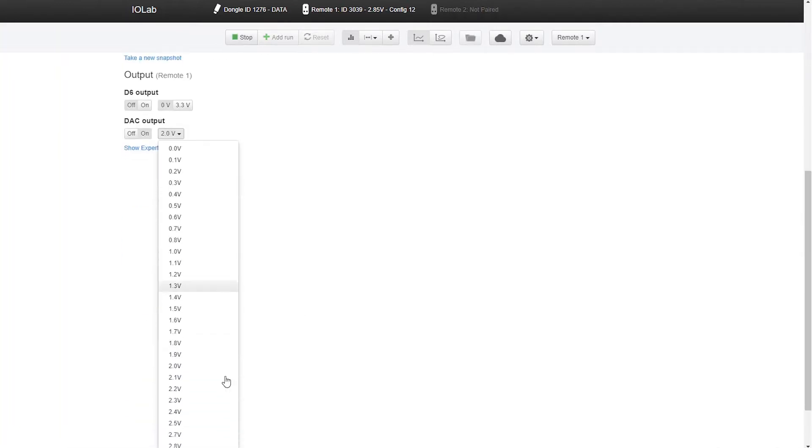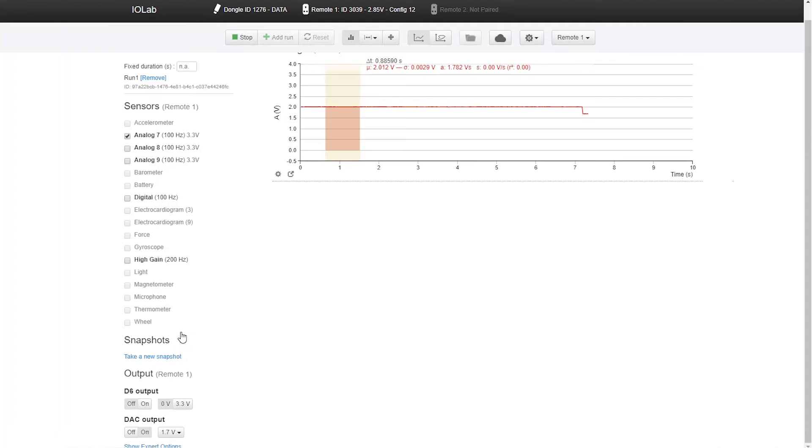But I can select this voltage to be anything I want. So I can say, okay, I want 1.7 volts, and now you have 1.7 volts, or I want 0.2 volts, and now I got 0.2 volts. You have complete control of the output of this device in an analog sense.